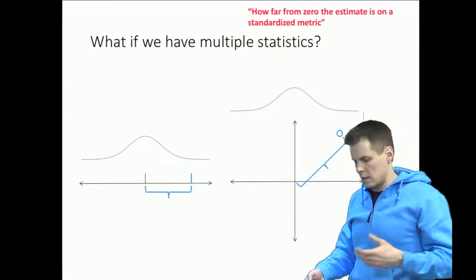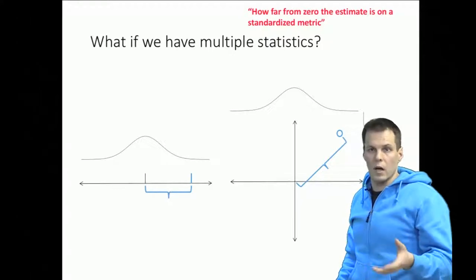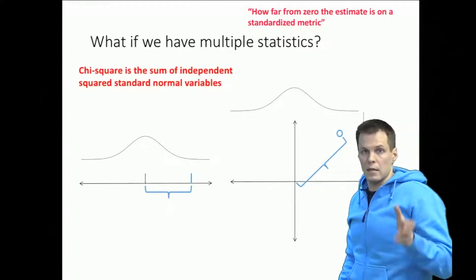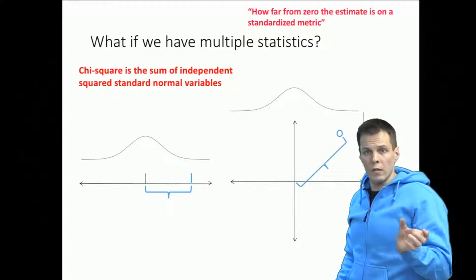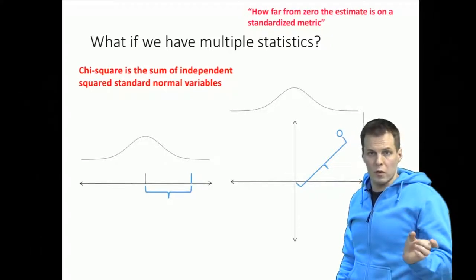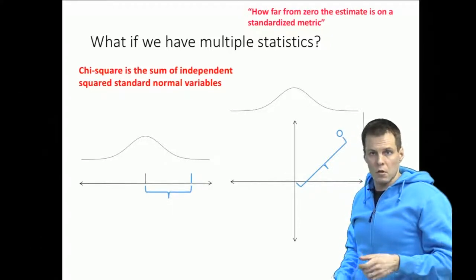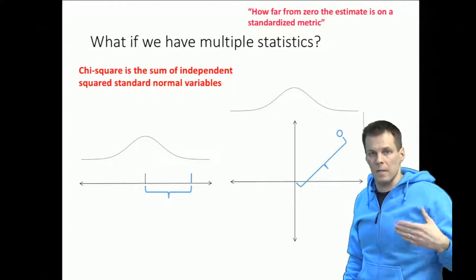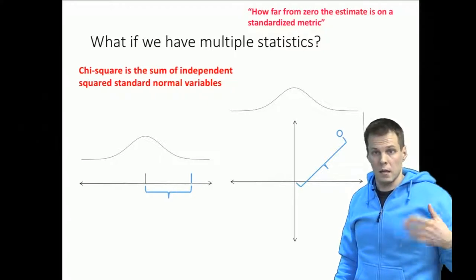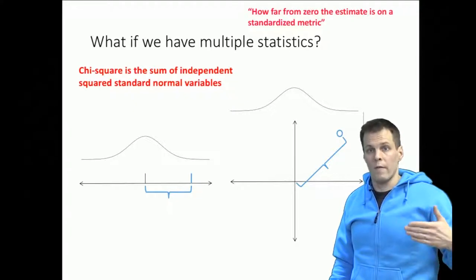So what we actually do is that for this kind of multiple hypothesis testing is that we compare the sum of squared variables against the chi-square distribution. So the chi-square distribution is defined as the sum of squared normal variables.